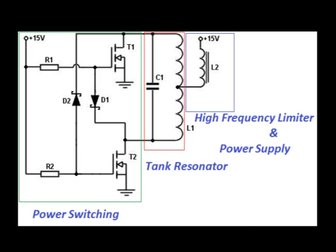The intent behind the induction furnace is to be able to heat up conductive or permanently magnetic materials. Our style of induction furnace is comprised of three different subsystems: the power switching, the tank resonator, and the power supply and high frequency limiter.